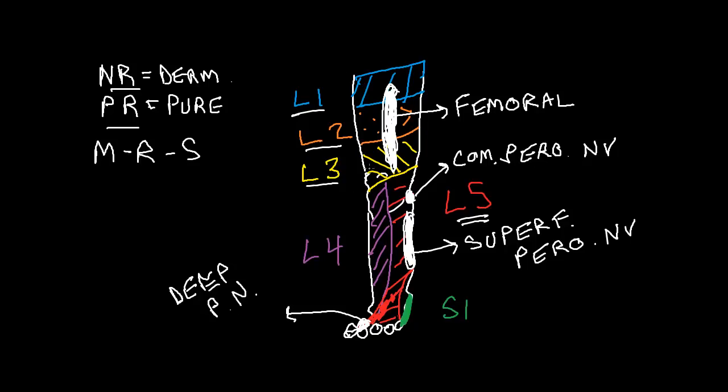We have another pure patch a little bit higher here, and it lies right over the vastus medialis muscle belly, superficially. This is the pure patch for the obturator nerve. If the patient had pain or paresthesias in that area, then I would do the MRS for the obturator nerve and the MRS for L3. My positive findings are going to tell me where the problem is.